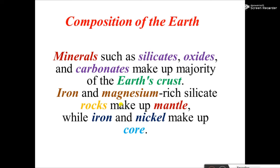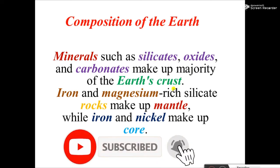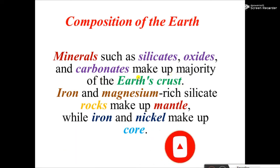This is the composition of the earth. The earth's crust, mantle, and core are its compositional layers. The crust is the first layer from the surface and is composed of minerals such as silica, oxide, and carbonate. We will see in detail what silica, oxide, carbonate, and minerals generally are in the future.